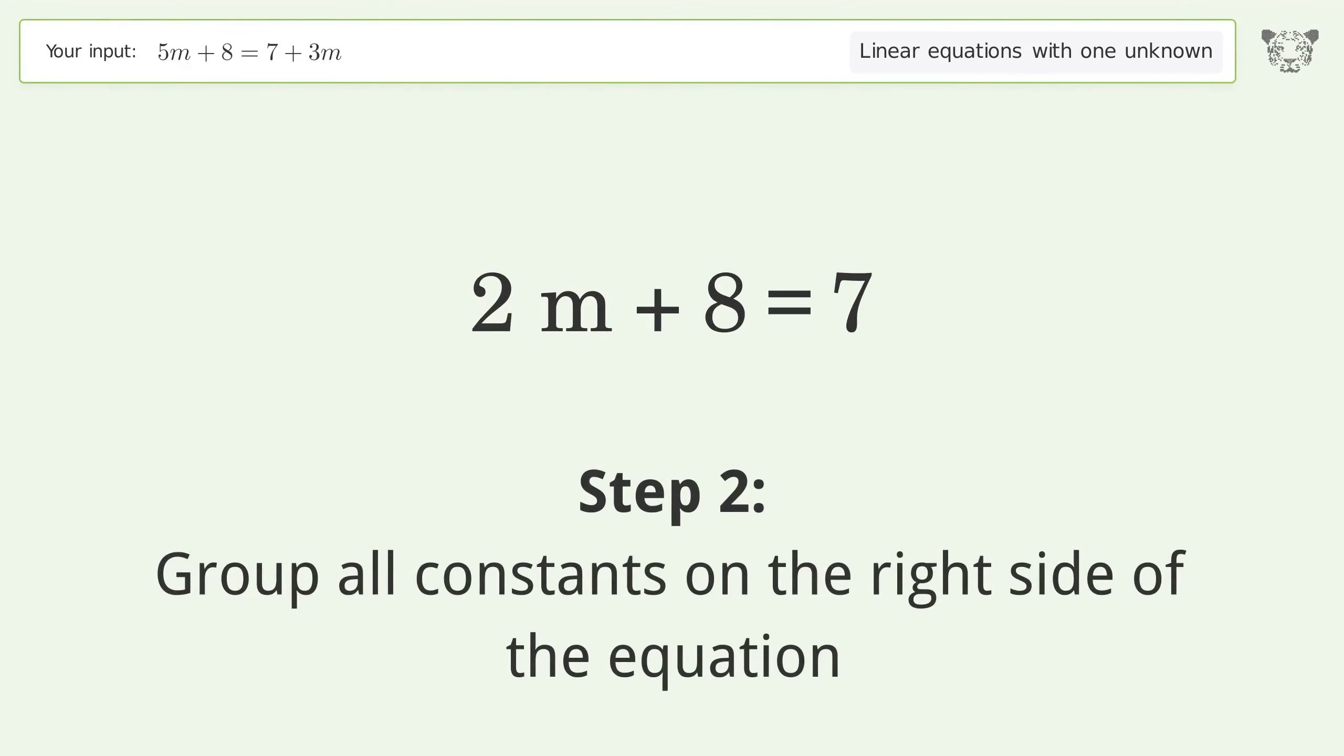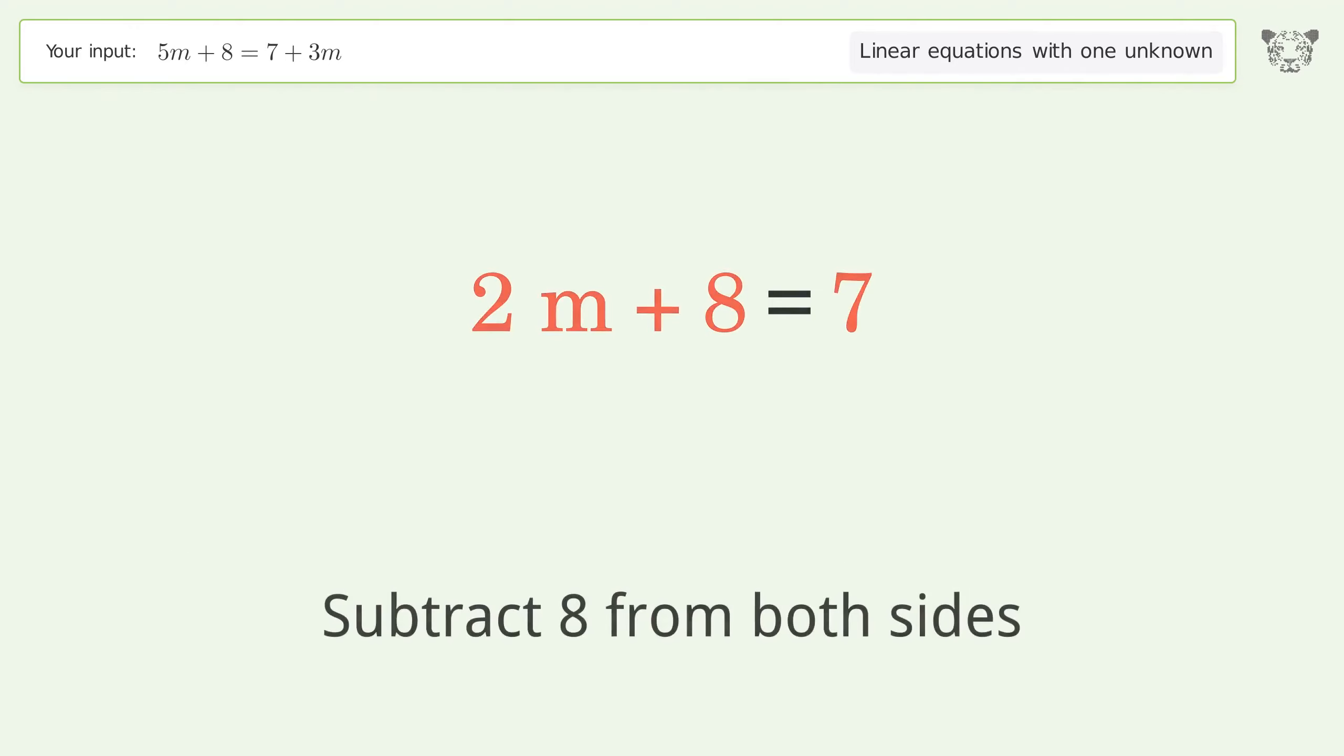Group all constants on the right side of the equation. Subtract 8 from both sides.